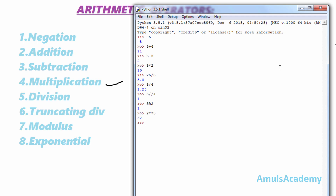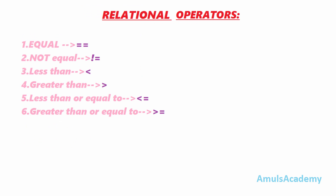Now we will move on to relational operators. There are six relational operators in Python: equal to, not equal to, less than, greater than, less than or equal to, and greater than or equal to. We can see the symbols here. First we will discuss about equal and not equal.